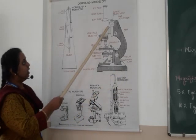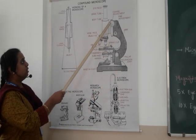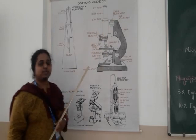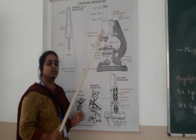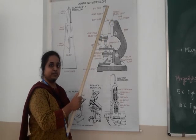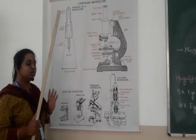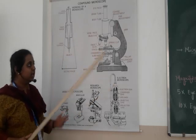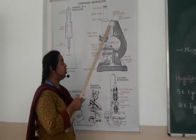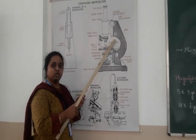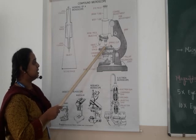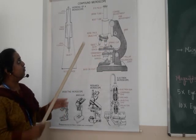There are two knobs on the microscope. The first is the coarse adjustment knob, also called the rough adjustment knob. When we first view a slide, we use the rough adjustment knob to get an initial image. Once we can see the slide, we use the fine adjustment knob to get more clarity. So first, use the rough adjustment knob, then move to the fine adjustment knob. The slide must be placed on the stage.